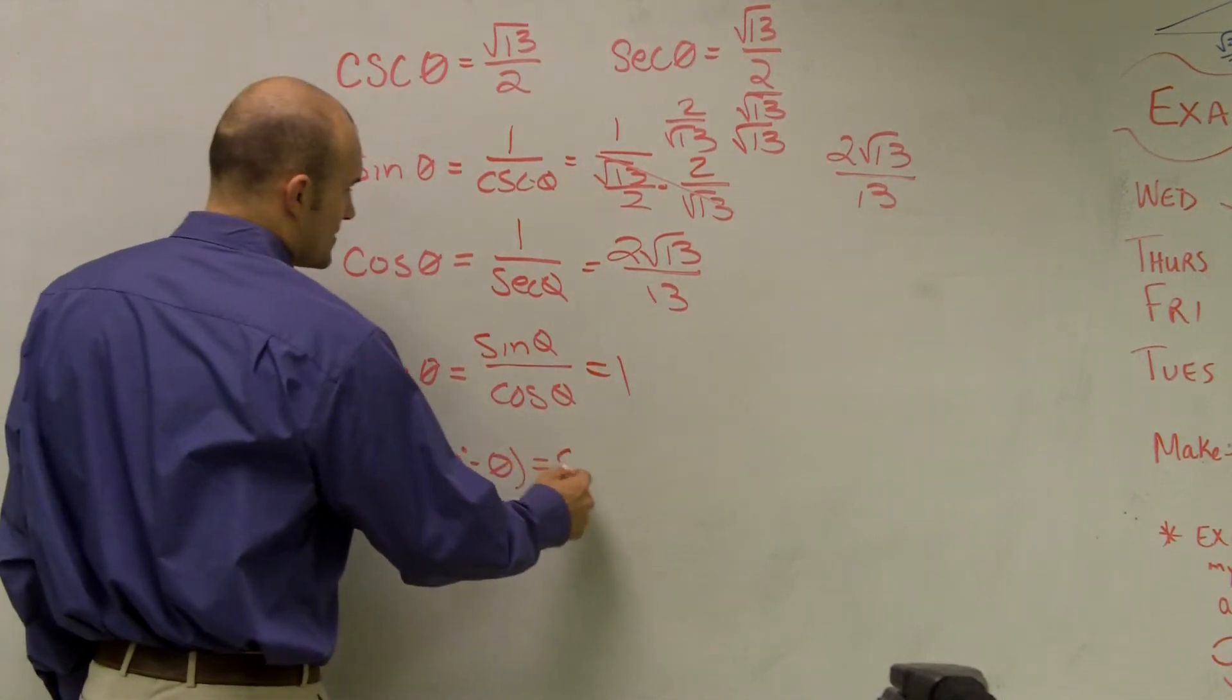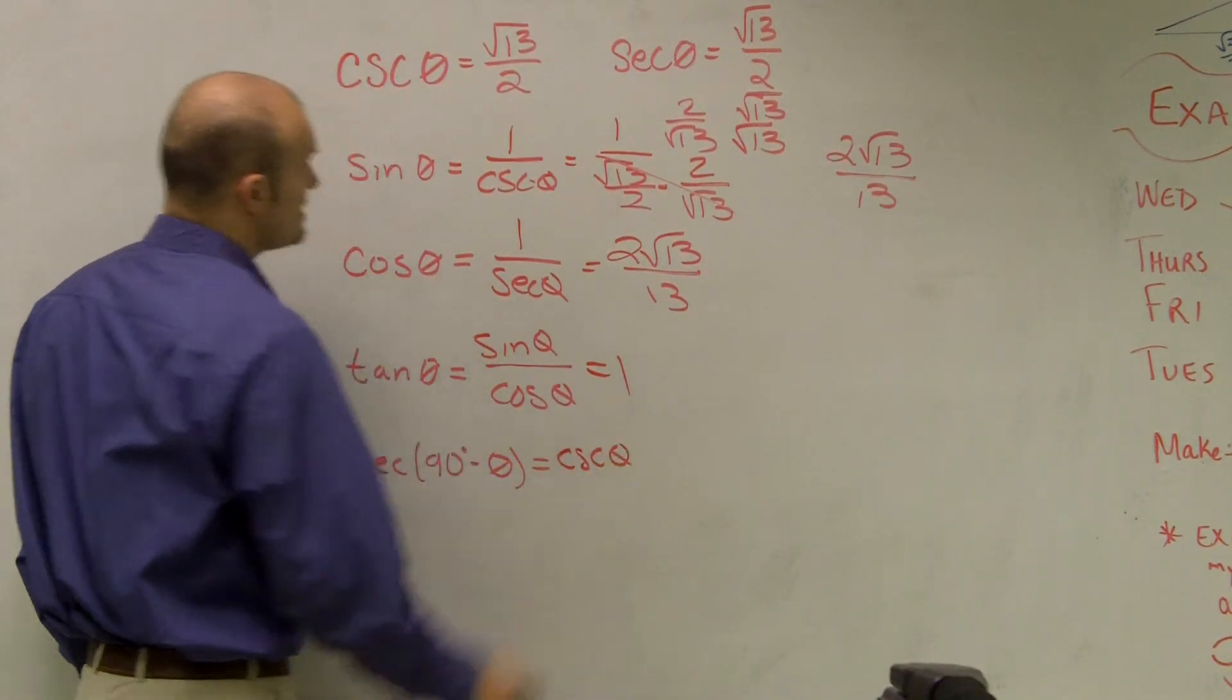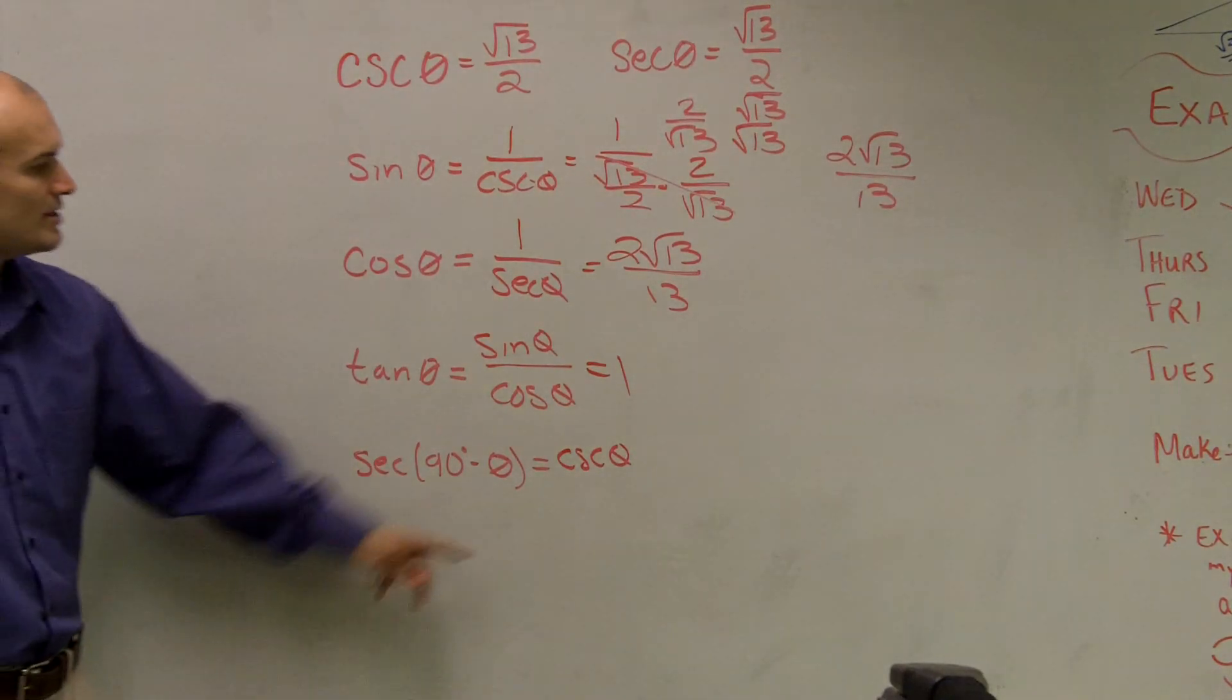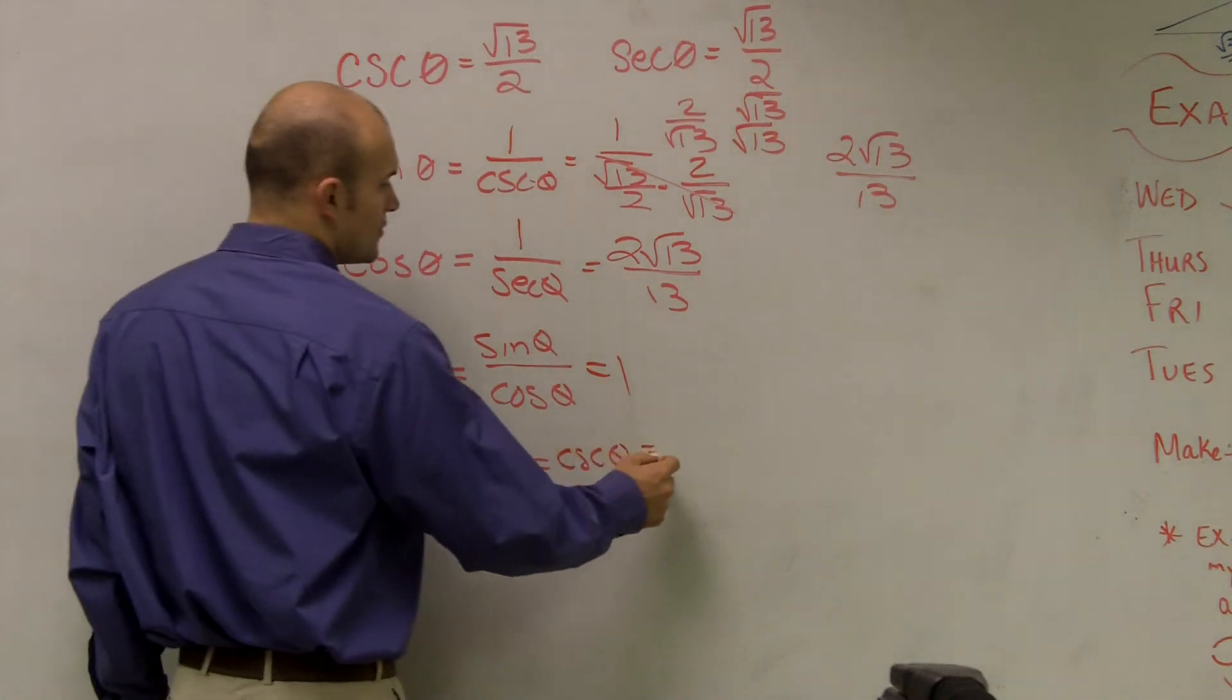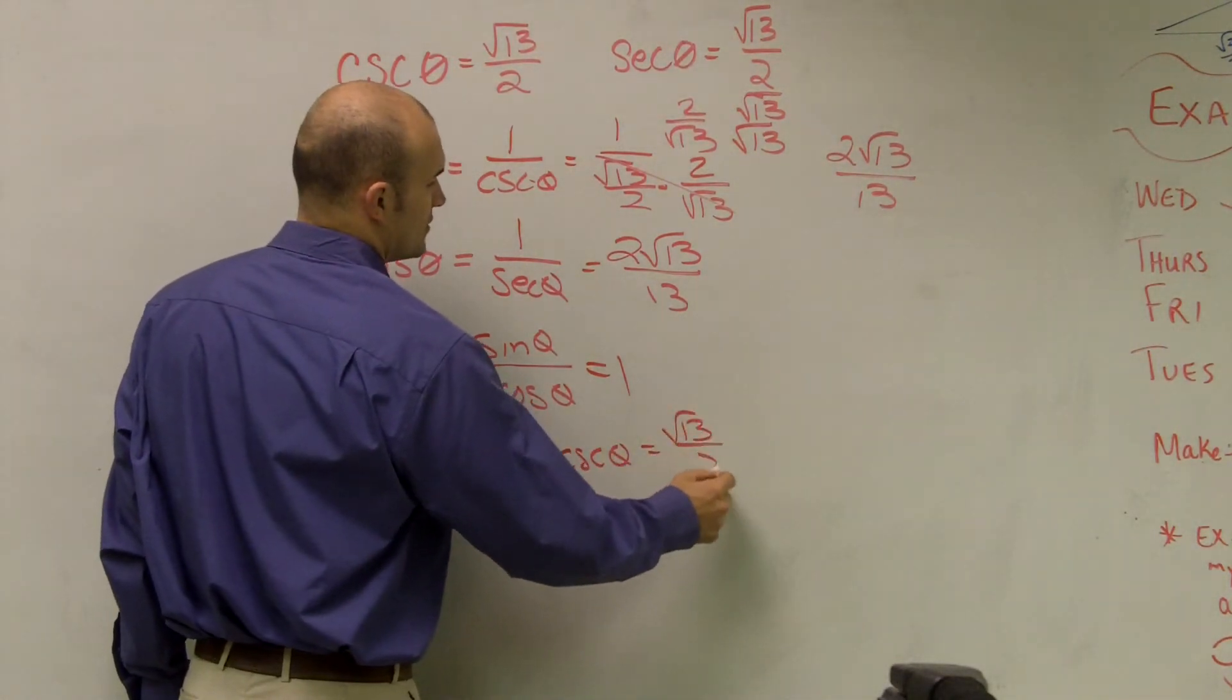And we know that from the original problem, cosecant of theta is equal to radical 13 divided by 2.